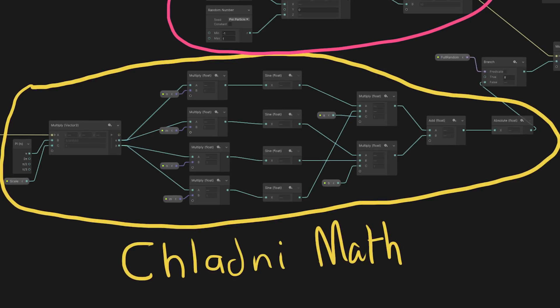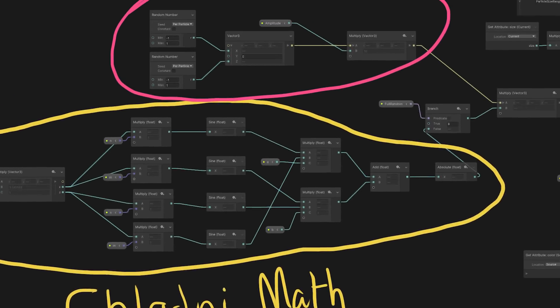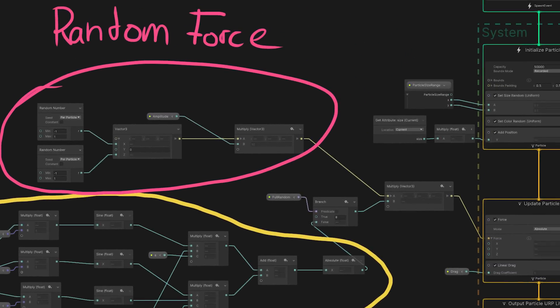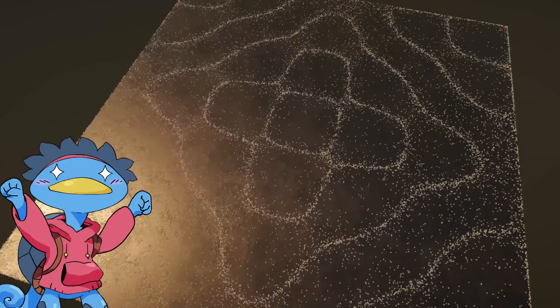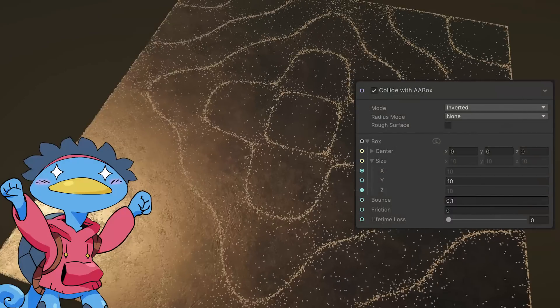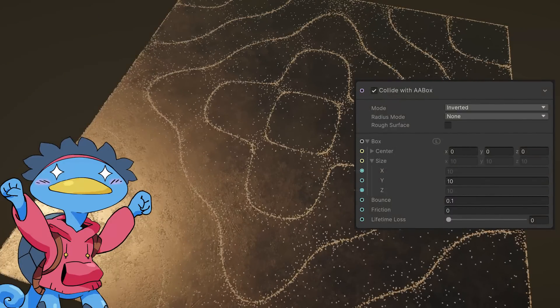When a grain of sand is in a vibrating area, a random force is applied to it, and the strength of that force is the strength of the vibration of this point. To my surprise, this is enough for the simulation to work great! First try! I'm adding an invisible box that collides with the grains of sand so that they don't fall off when they reach the edges of the plate, and voila!